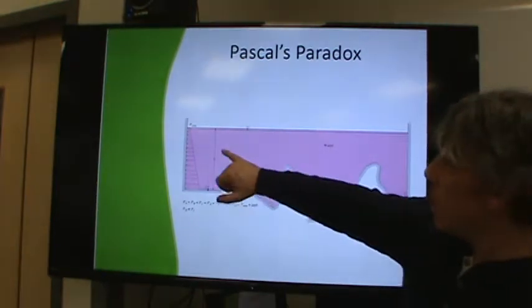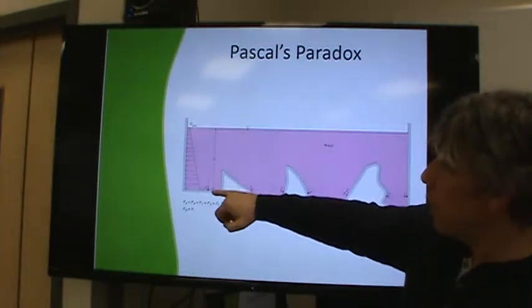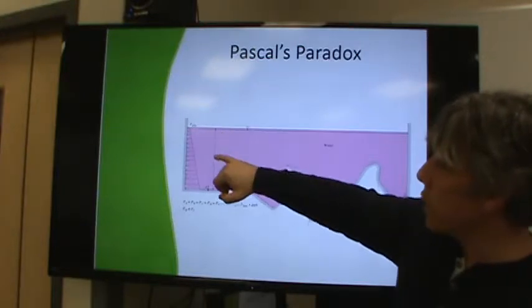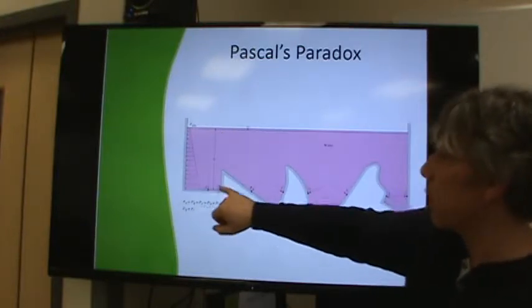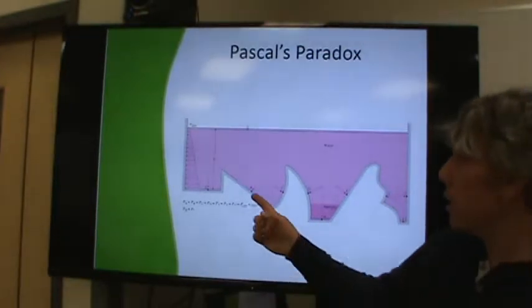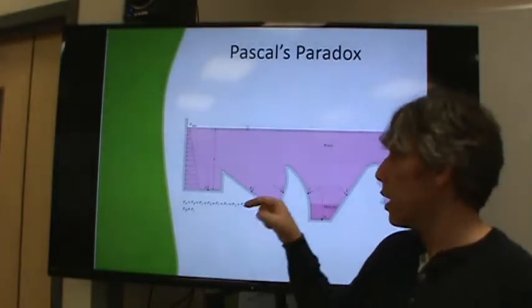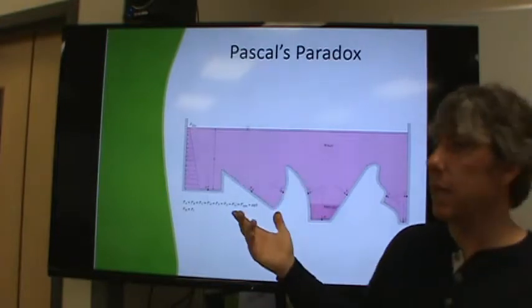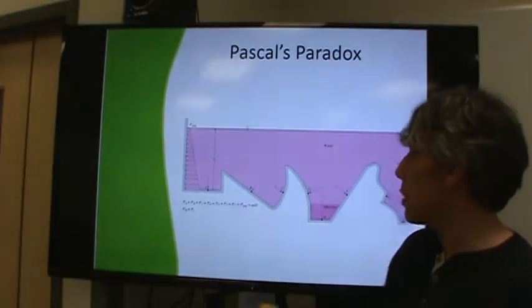But in fluid statics, the amount of pressure that is experienced depends only on the depth beneath the fluid. It doesn't depend on the shape of the container, and that seems strange. It's because our intuition is off a little bit. We like to think of this surface as being angled, so it shouldn't have as much pressure, but it does. And the shape doesn't matter.